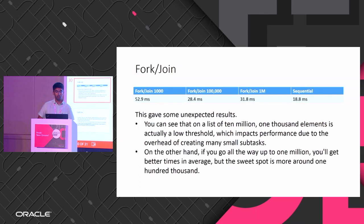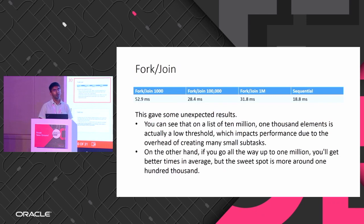Surprisingly, sequential code without fork join gave me 18 milliseconds. Why is the sequential execution faster? Because of context switching — and it's a pretty simple task. Addition doesn't take so much time, so there's no point splitting it. The context switching and thread management overhead takes more time than actual execution.